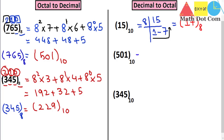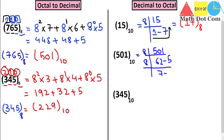Similarly, for the number 501, we do repeated division by 8. 8 sixes are 48, remainder 21; then 8 twos are 16, remainder 5; then 8 sevens are 56, remainder 6. We can't divide further, so writing the remainders in reverse gives us 765 — the octal equivalent of decimal 501.